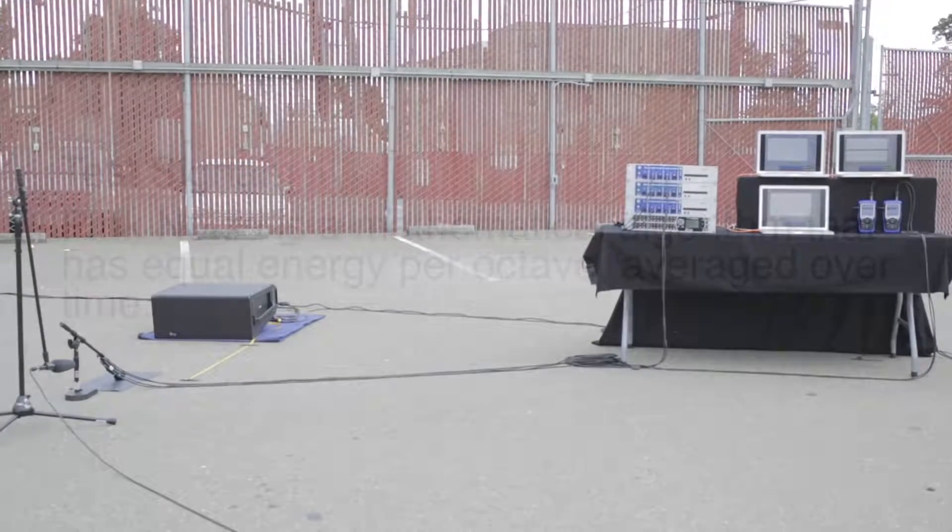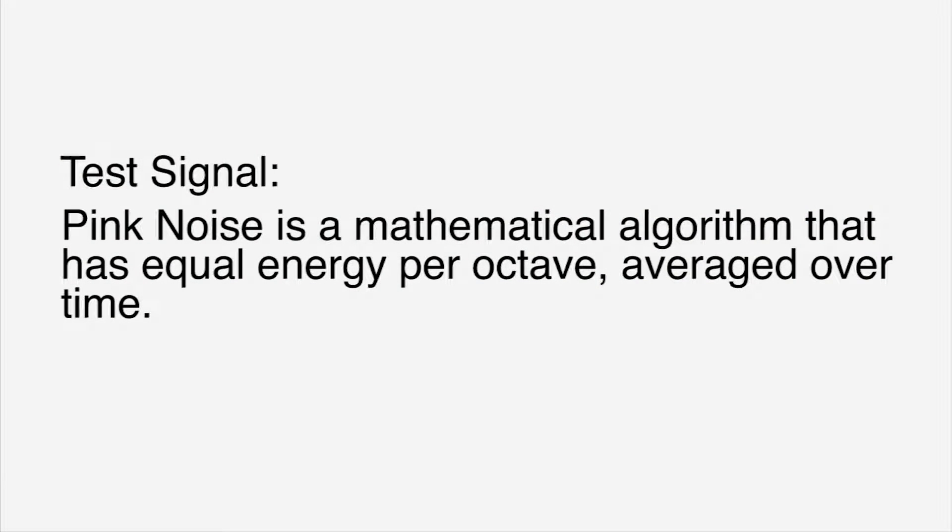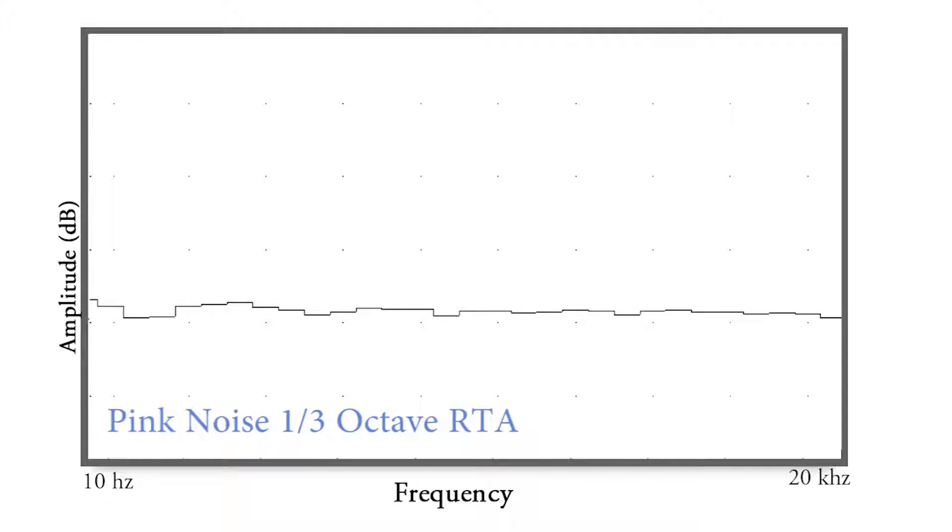A test signal with defined parameters is needed. Pink noise is a mathematical algorithm that has equal energy per octave averaged over time. This is what it looks like on a third octave spectrum analyzer. The measurement is equal magnitude, or flat, and can be used to test the acoustical output power of an individual loudspeaker measured with a microphone.